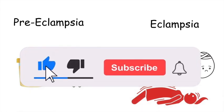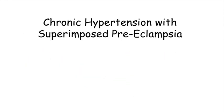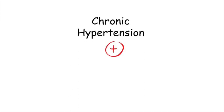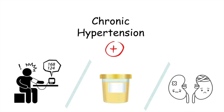Another hypertensive disorder in pregnancy that might show up on your exam is chronic hypertension with superimposed preeclampsia. To diagnose a patient with this, they must have chronic hypertension and at least one of the following: new elevated or worsening blood pressures, worsening proteinuria, or signs of end organ damage.